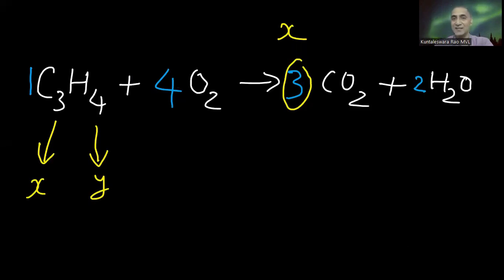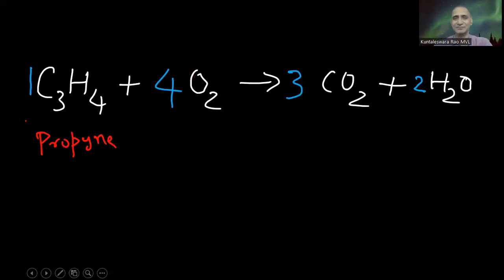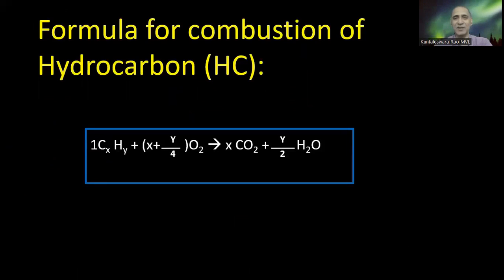See the balanced reaction? Coefficient of carbon dioxide is X. What is X there? Notice. The X value is repeated there. How many moles of water you form? Y by 2. See the numbers. X plus Y by 4. That is the oxygen coefficient. Here Y by 2 is water. This is the formula for combustion of hydrocarbon.